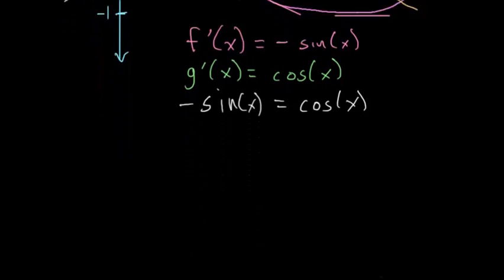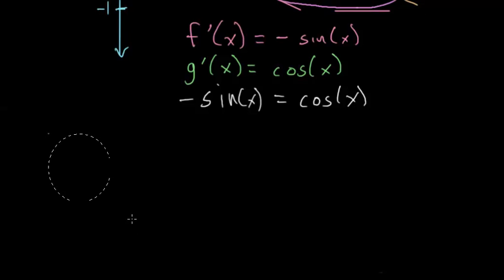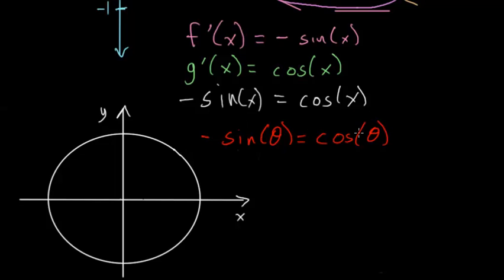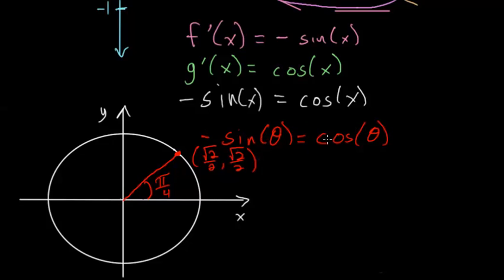We can look at this more closely on the unit circle. Let's change the variable to theta to avoid confusion with the x-coordinate. So we have minus sine of theta equals cosine of theta. We know that sine and cosine have the same value when theta equals pi over 4 — that's at root 2 over 2 for both. So we need to find when cosine equals the opposite of sine, or when sine equals the opposite of cosine.